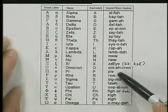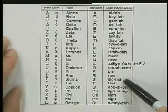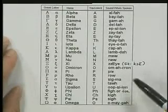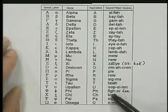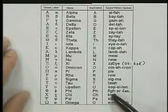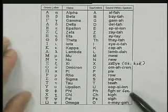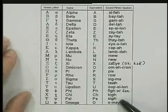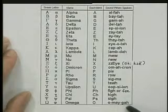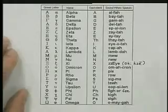Omicron, pi, rho, sigma, tau, epsilon, phi — or I prefer phi — chi, psi, which we just saw, and omega, the last letter of the Greek alphabet.